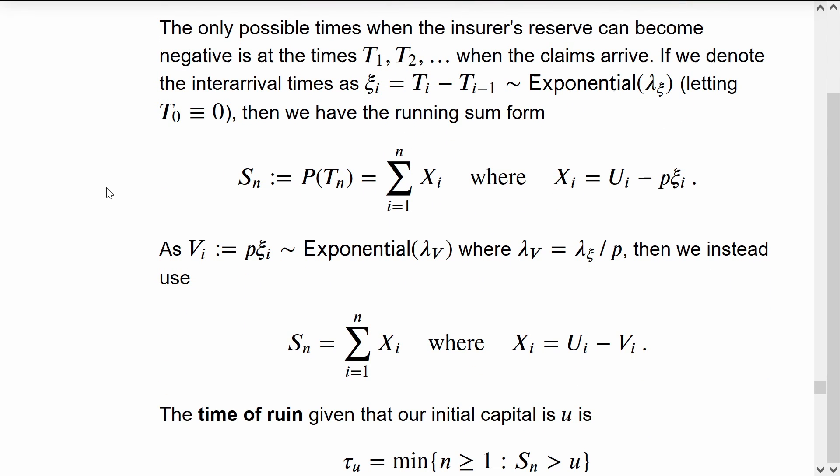The only time that we can have ruin is at one of the times when a claim arrives. We'll rewrite the arrival times of the claims as their inter-arrival times, psi_i.